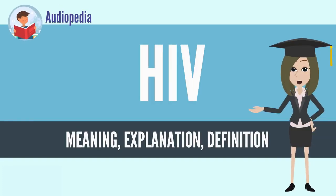HIV, the human immunodeficiency virus, is a lentivirus — a subgroup of retrovirus — that causes HIV infection and, over time, acquired immunodeficiency syndrome, AIDS. AIDS is a condition in humans in which progressive failure of the immune system allows life-threatening opportunistic infections and cancers to thrive. Without treatment, average survival time after infection with HIV is estimated to be 9 to 11 years, depending on the HIV subtype.